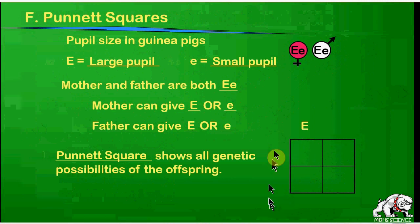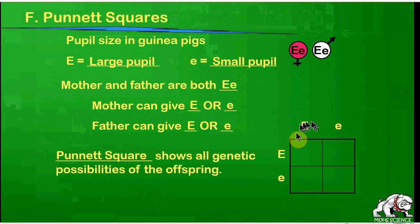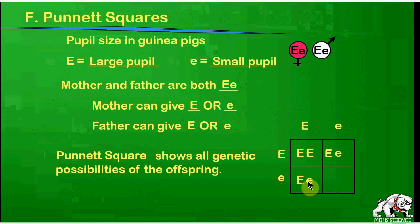In a Punnett square, the top represents one parent and the side represents the other. On top we put the female: big E and little e — there's a 50% chance she gives capital E and 50% she gives lowercase e. The male is along the left side the same way. The panes inside the box represent the possibilities for offspring. One box gets big E from mom and big E from dad — big E, big E. The next gets big E from dad and little e from mom — big E, little e. You should always write capital before lowercase. The third box gets big E from mom and little e from dad — big E, little e again. The last box gets little e from both parents — little e, little e.